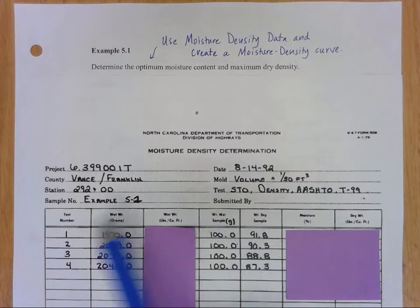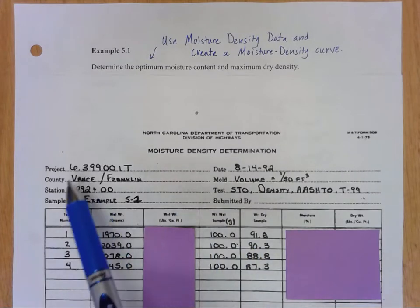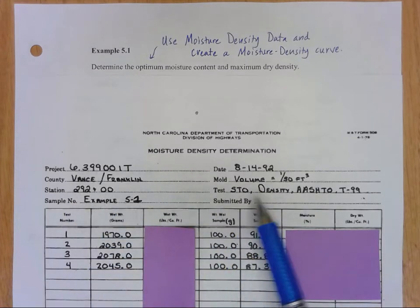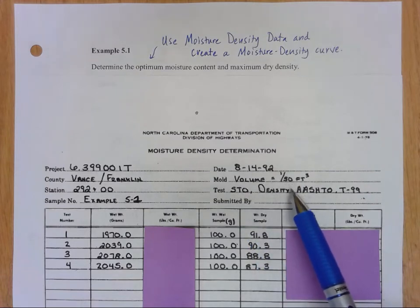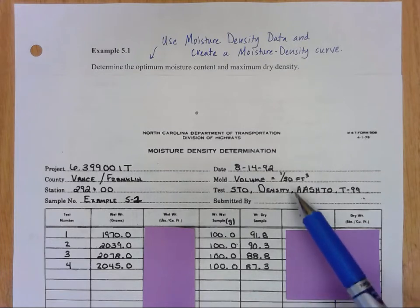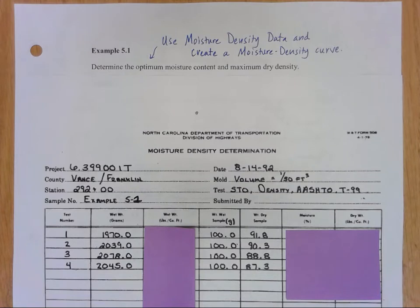Let's take a look at this sheet first. It just has your information for where your sample was taken, date, the volume of the mold. Like I said that's always going to be this 1 over 30 cubic feet. So that's kind of a constant for us. Maybe if you're in the field you'd have something different but most likely it would be that 1/30th of a cubic foot for your mold size.